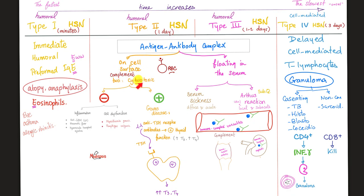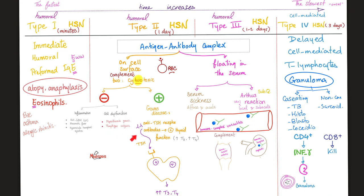Type 2 is cytotoxic. We have an antigen-antibody complex on the surface of the cell. These antibodies can inhibit the target — causing inflammation as in anti-glomerular basement membrane antibody disease (Goodpasture syndrome), rheumatic fever, and hyperacute transplant rejection — or cause cell dysfunction, as in myasthenia gravis and pemphigus vulgaris.